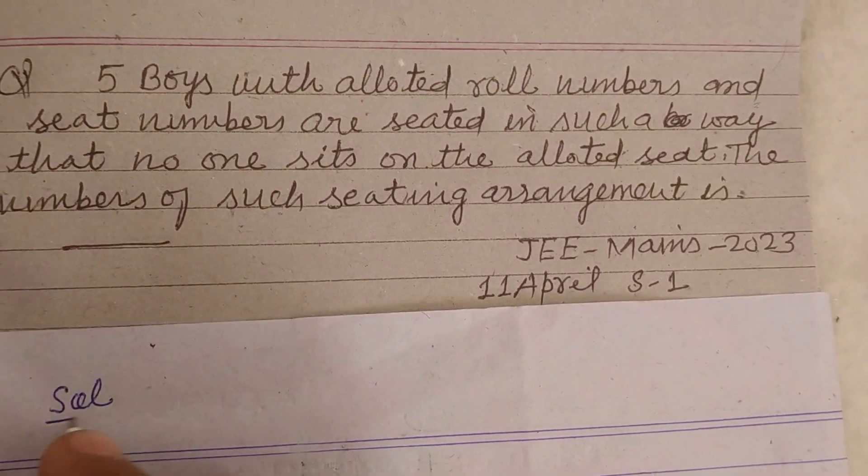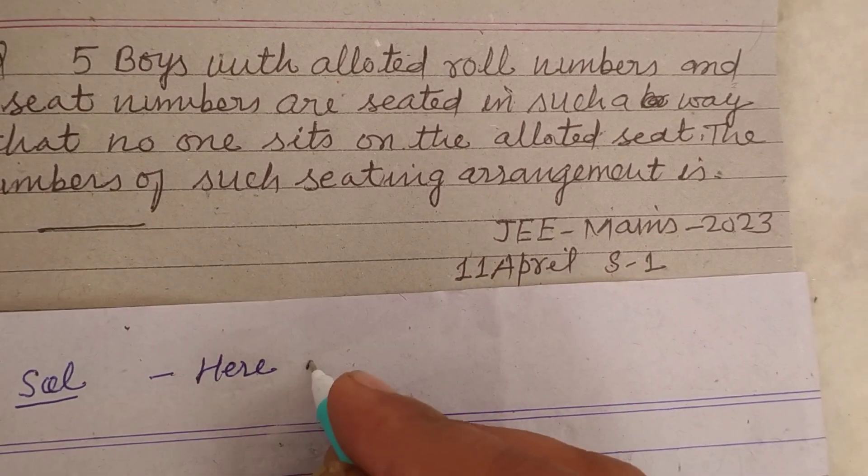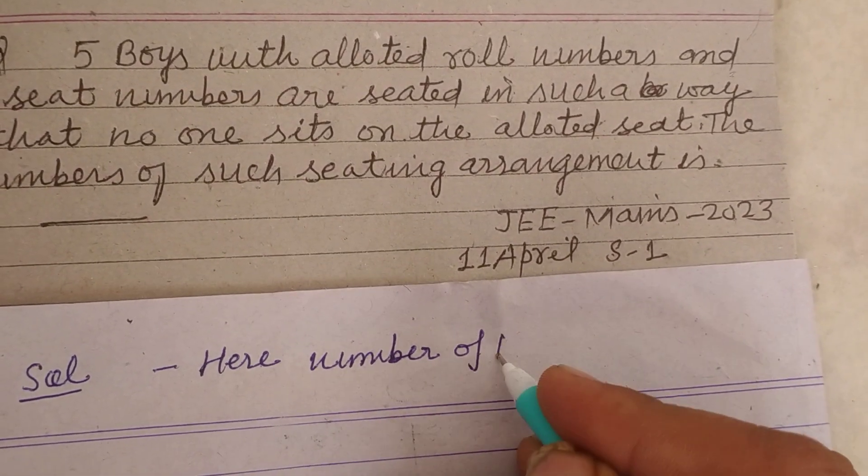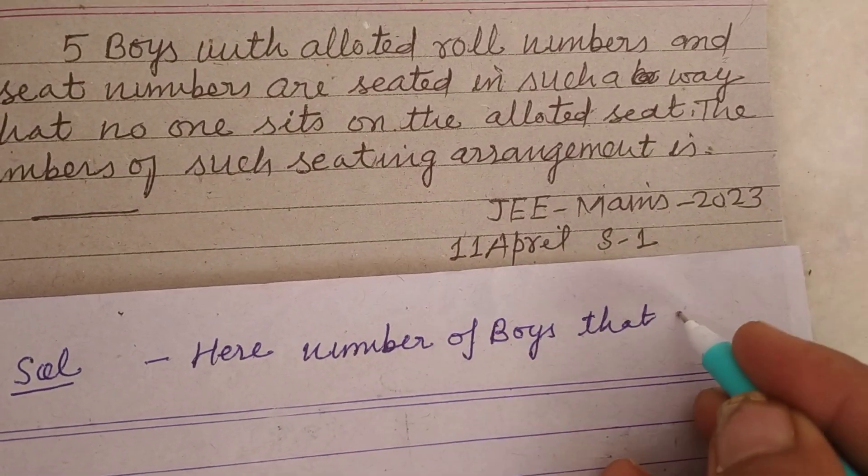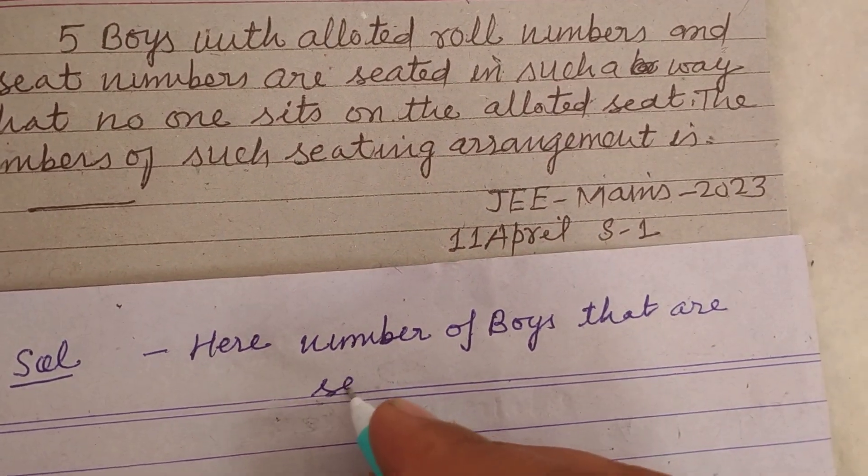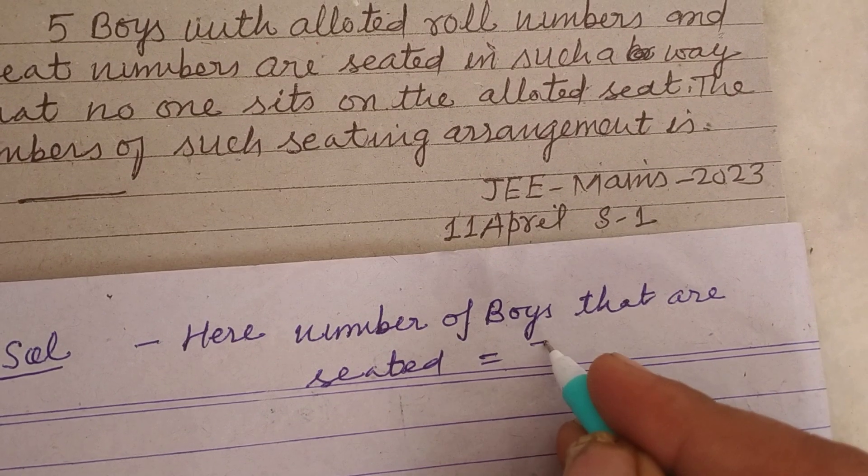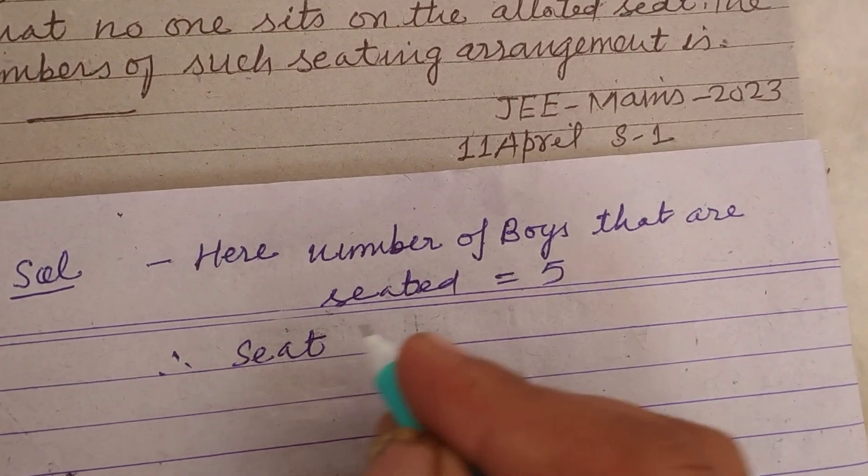So students, here the number of boys that are seated is five. Therefore, the seat arrangement formula we need to use is...